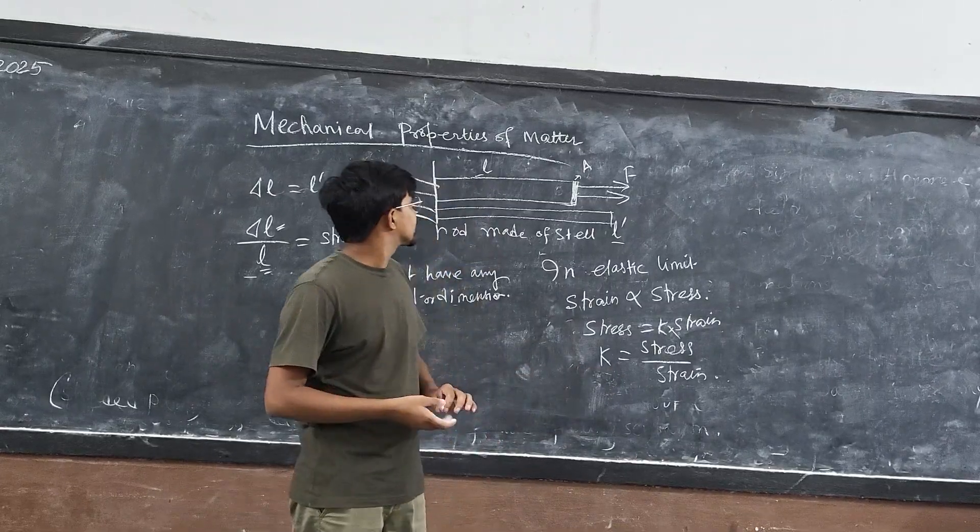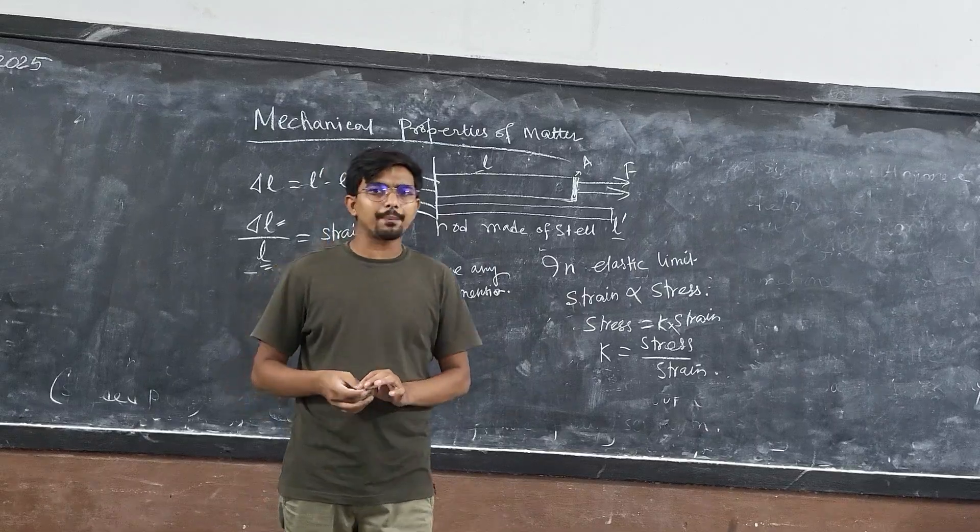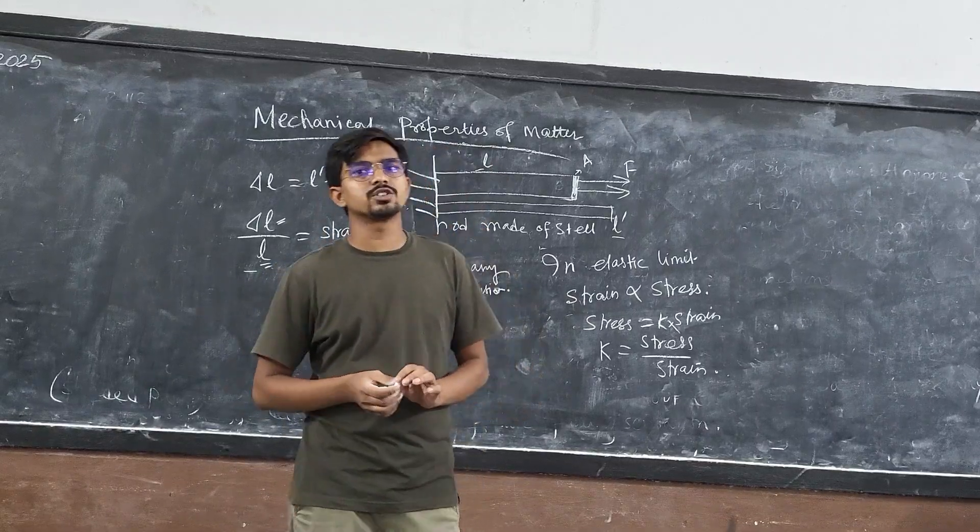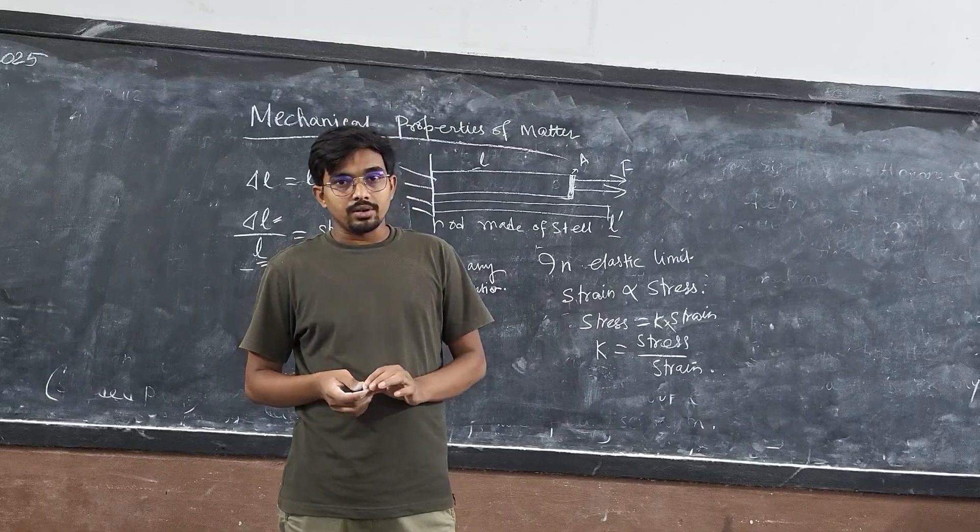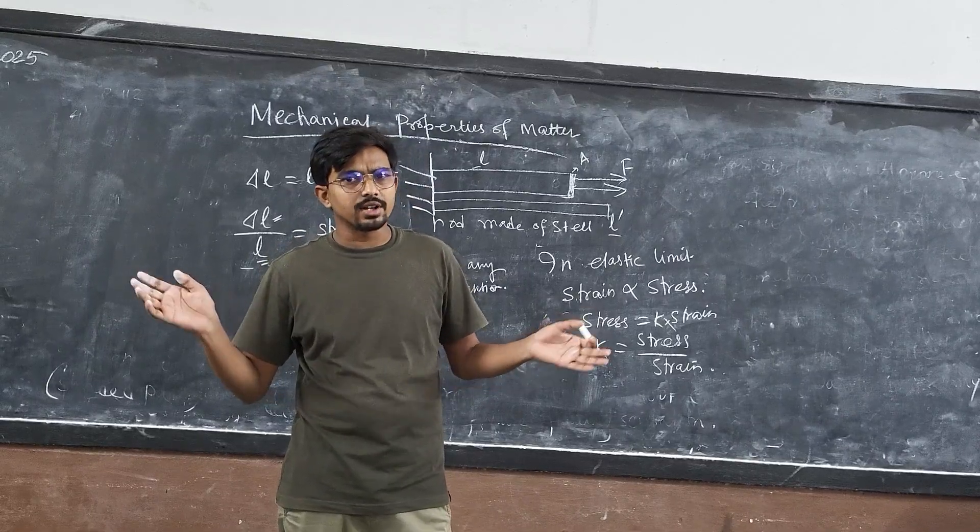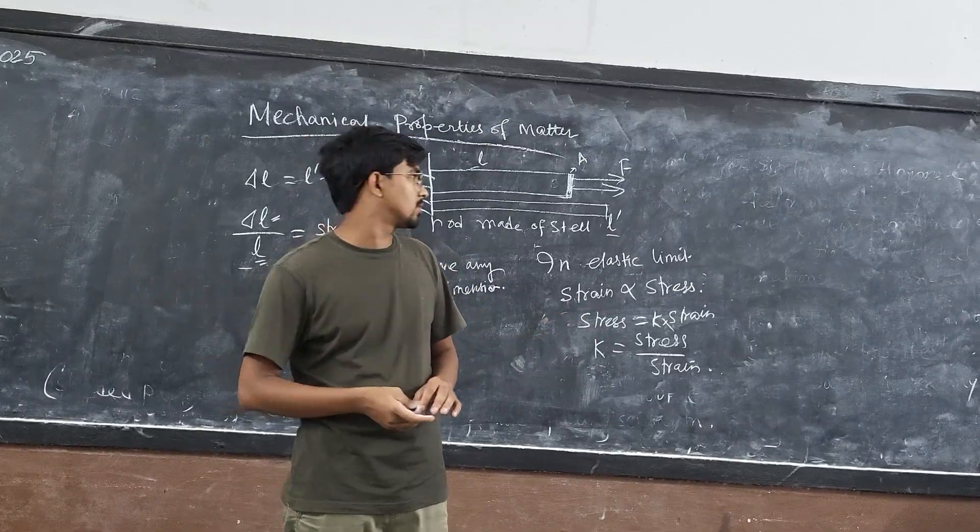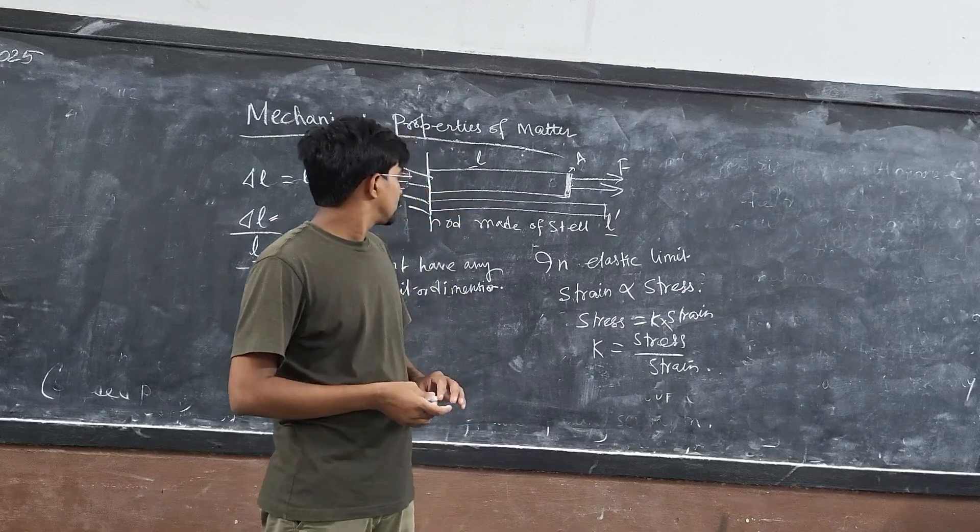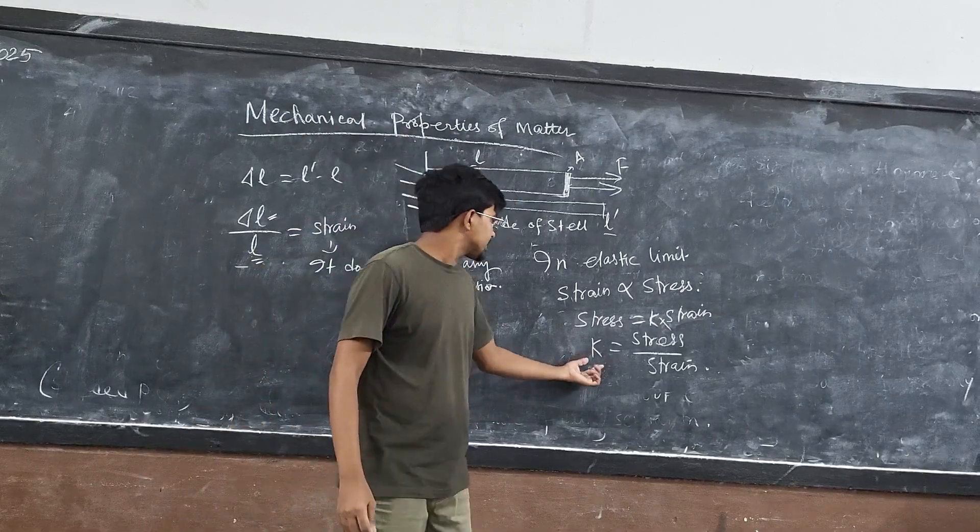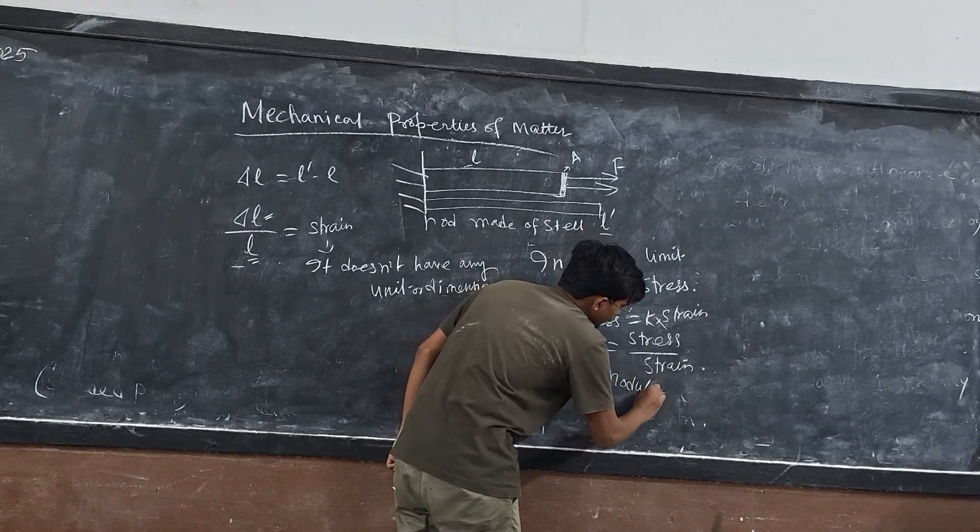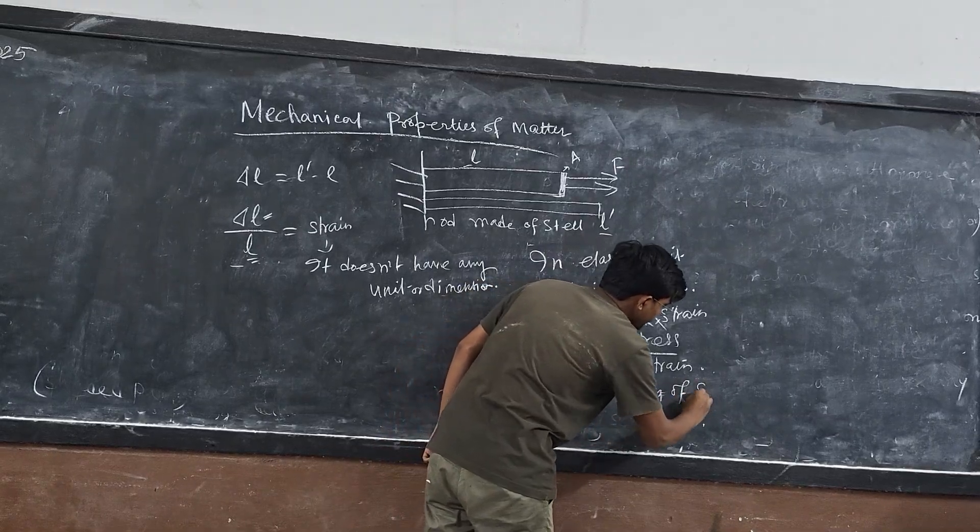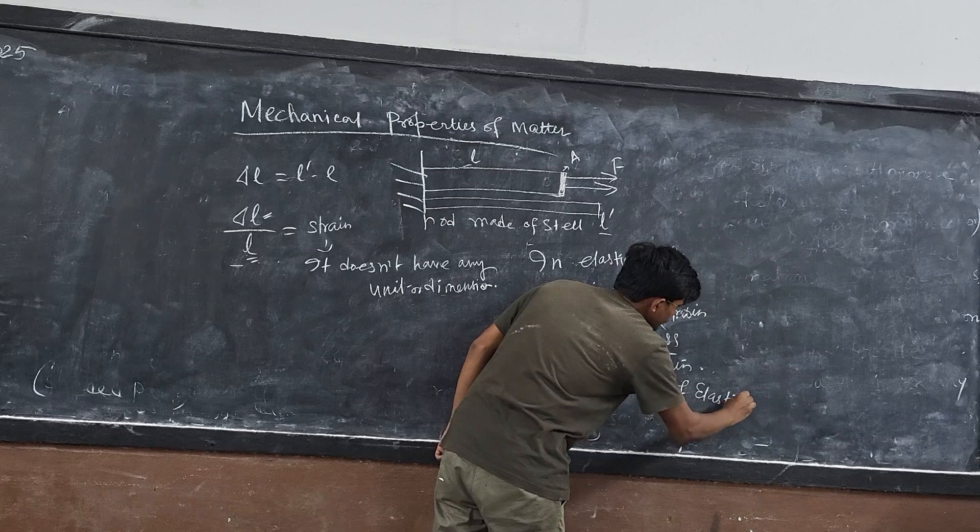This is the modulus of elasticity. So in a clear way you can see whenever a stress happens, whenever we are applying a stress on an object, it results in a strain. There are different types here. I am not going to talk about that today. And you will see here this modulus of elasticity.